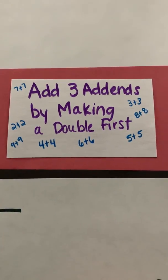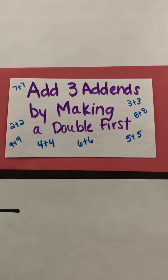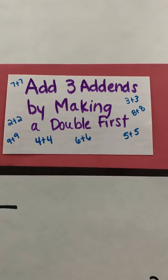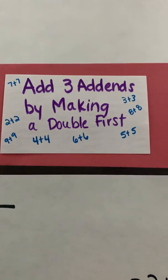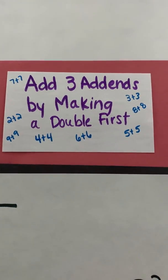So what we're going to do now is we are going to have these doubles, but we're also going to have a third addend. So we're going to have three numbers that we're going to add together and we're going to look for the doubles and add those together first before we add the last addend. So let's get started.